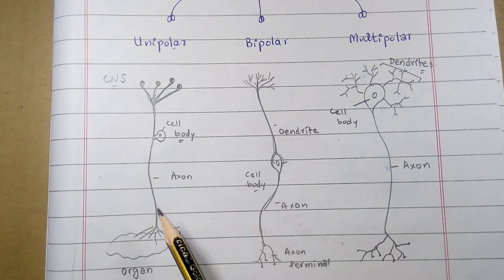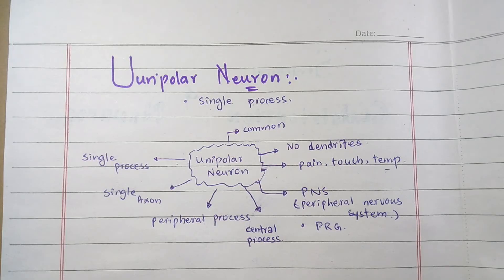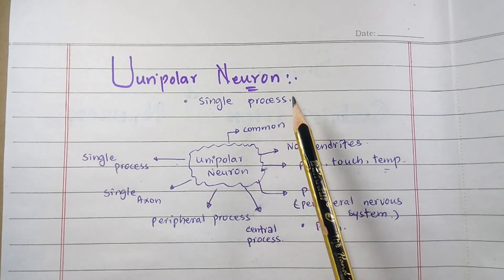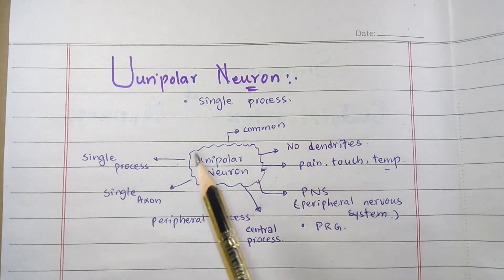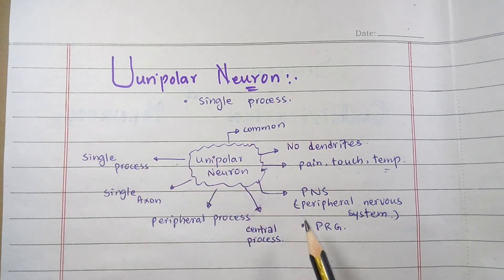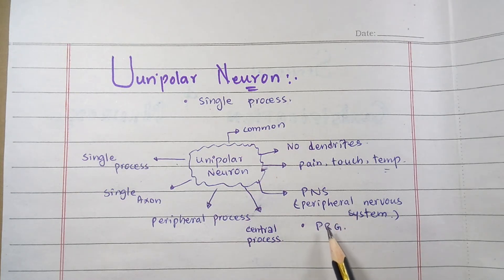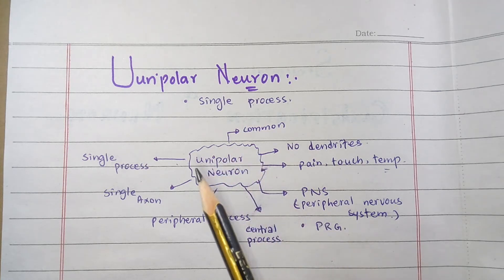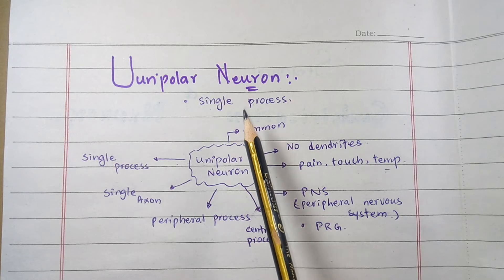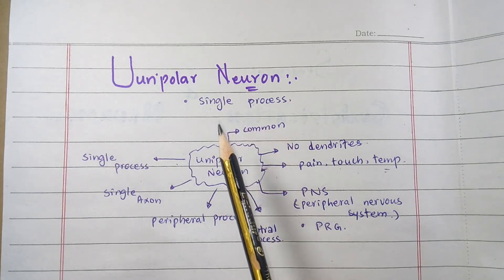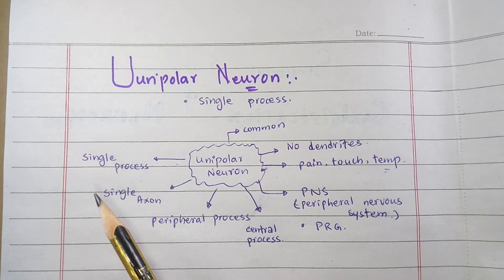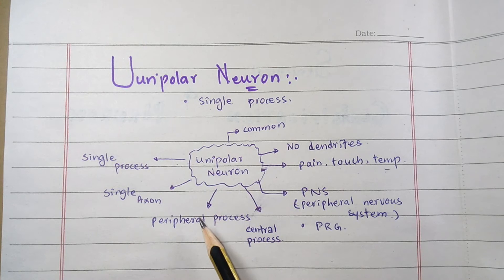Moving toward the detail of the unipolar neuron: unipolar neurons have a single short process that extends out from the cell body. They are found primarily in the afferent region of the peripheral nervous system, located on the posterior root ganglia. They are called unipolar because they have a single axon which divides close to the cell body.